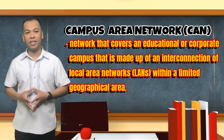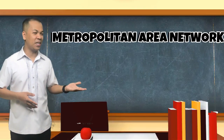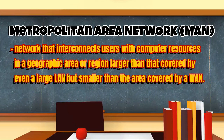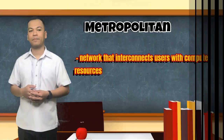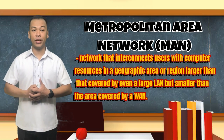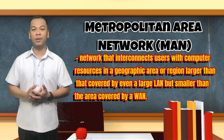Networks can be bigger than this. At the opposite end of the scale, we are talking about MAN, the metropolitan area network. A metropolitan area network is a network that interconnects users with computer resources in a geographic area — a region larger than that covered by even a large local area network, but smaller than the area covered by a wide area network. A metropolitan area network, for example, might connect two different buildings or offices in the same city or municipality.